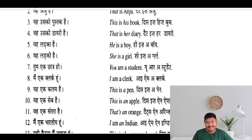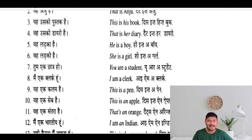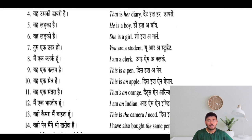So the basic thing is the use of A, AN, or The. AN is used when there is a vowel — like apple or elephant: this is an elephant. The vowels are A, E, I, O, U.